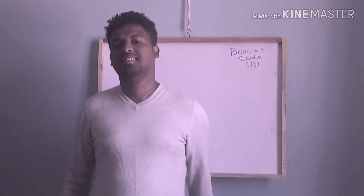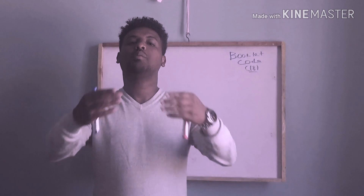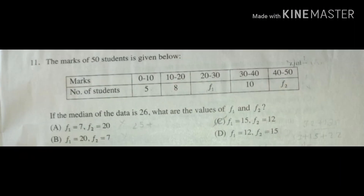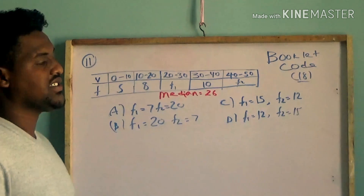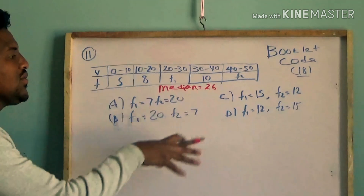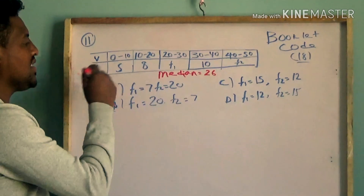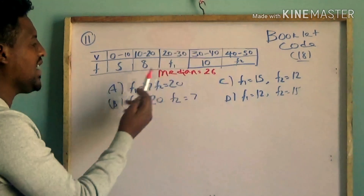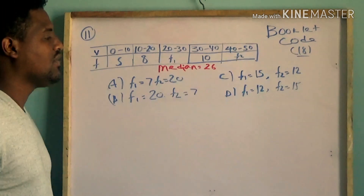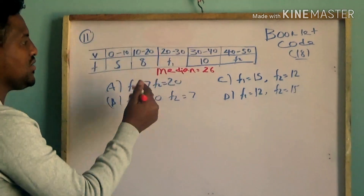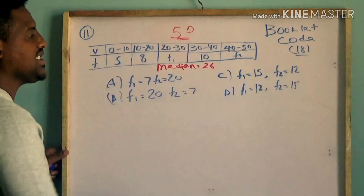We are finding the median for grouped data. Each group has a data value and we need the frequency. The frequencies for each class are given. We look at the frequency and class intervals — the total frequency is 50, given as hamsa (50).